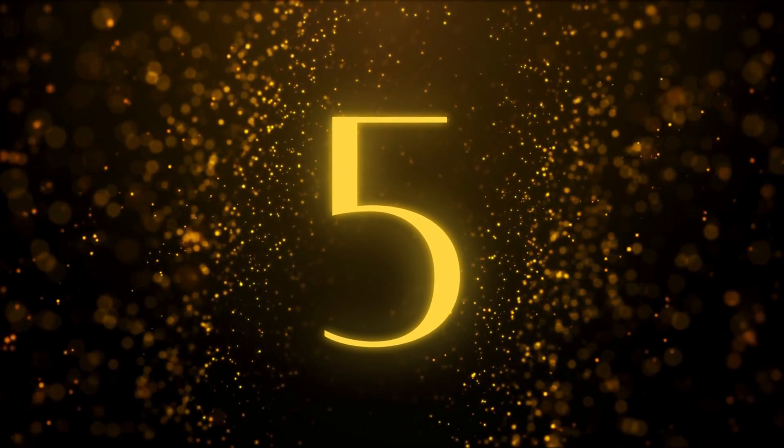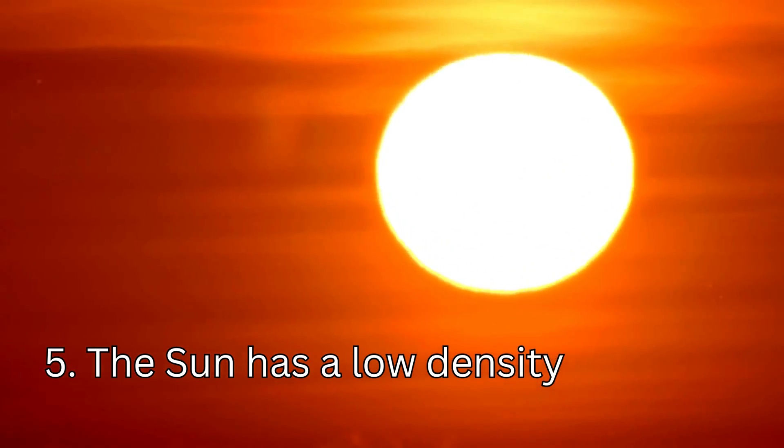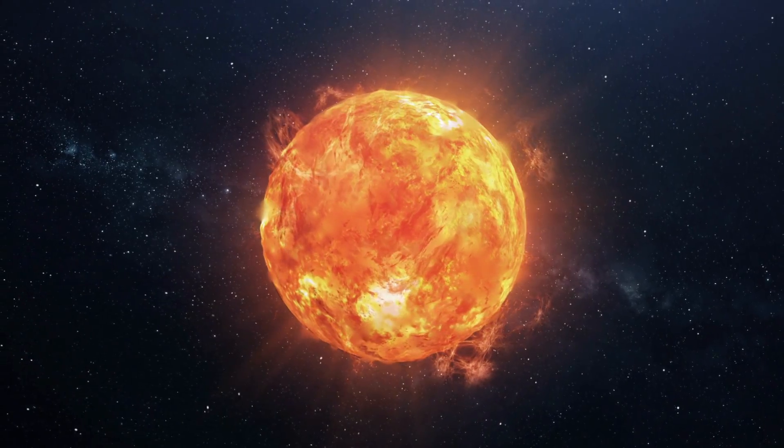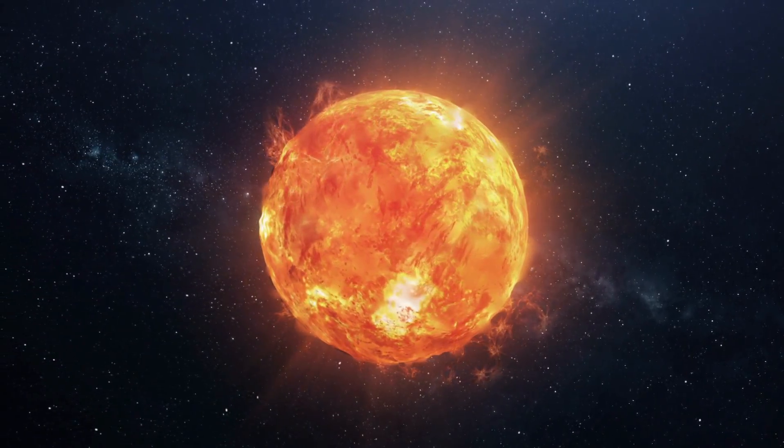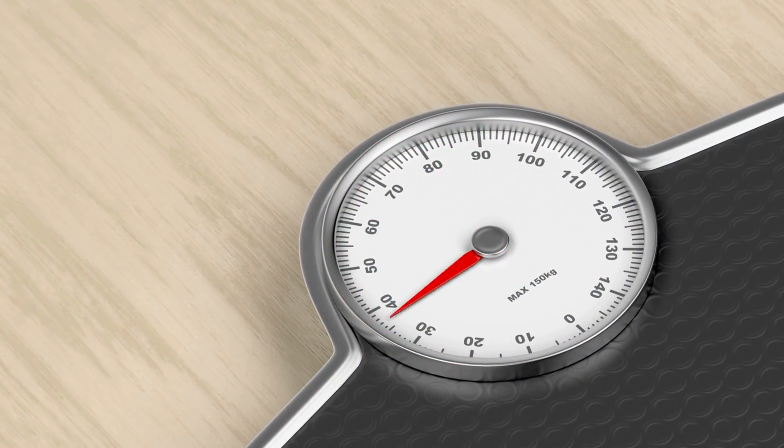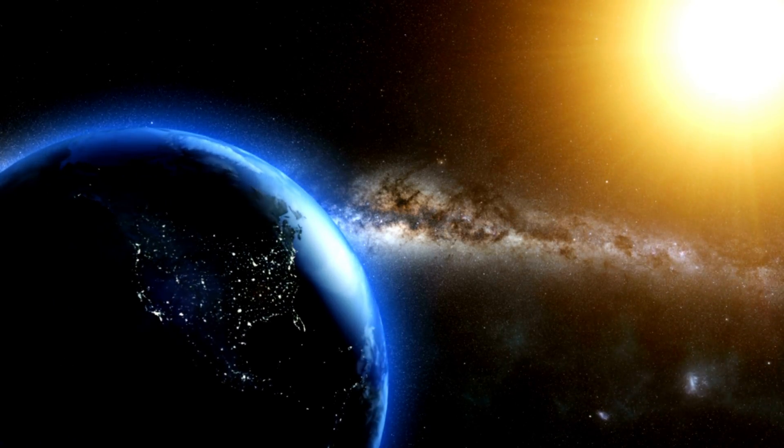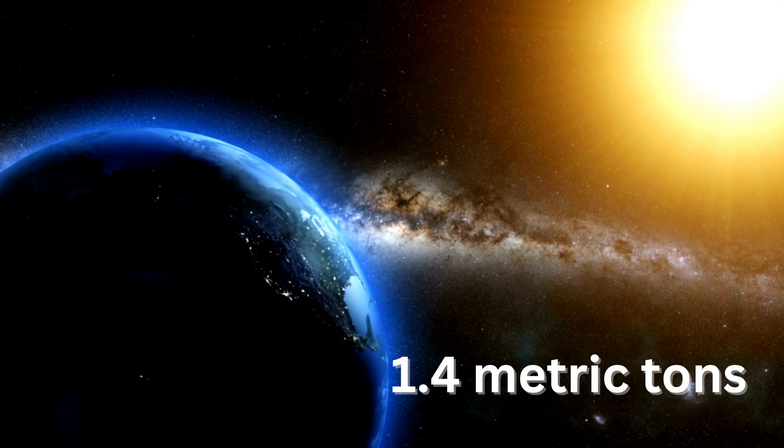A surprising Fact Number 5: The Sun has a surprisingly low density. Despite its massive size, the Sun has a surprisingly low density. If you were to take a cubic meter of the Sun's material and bring it to Earth, it would only weigh about 1.4 metric tons.